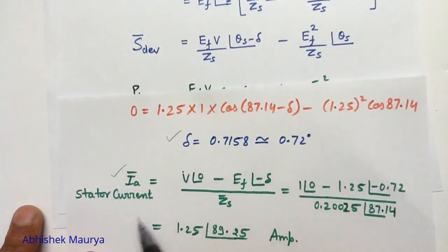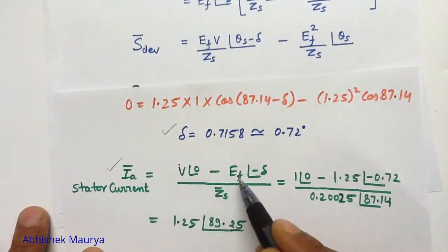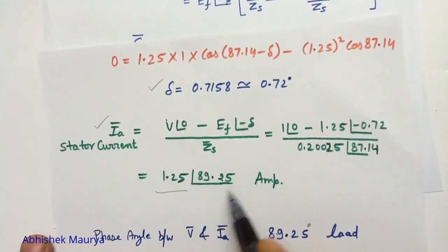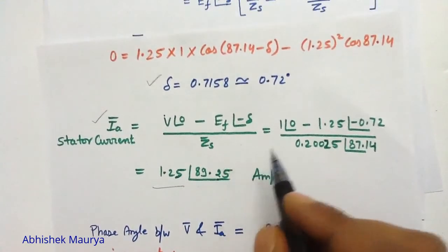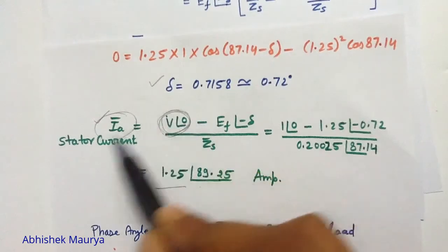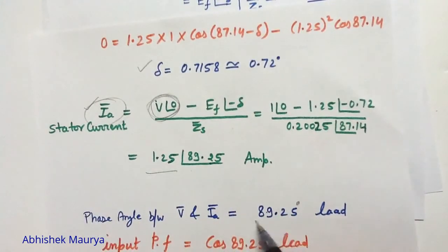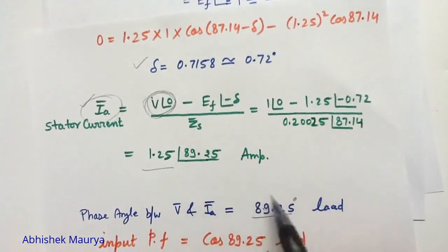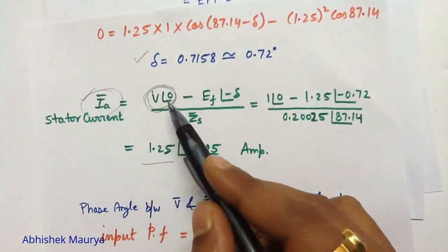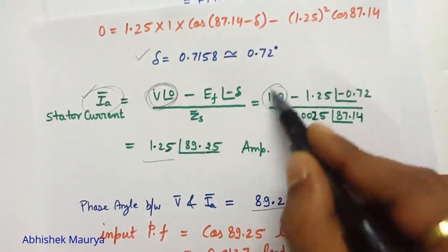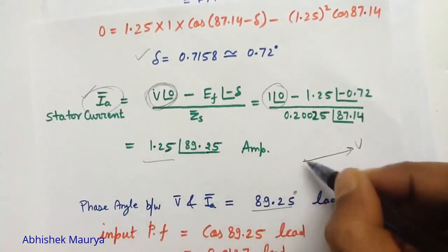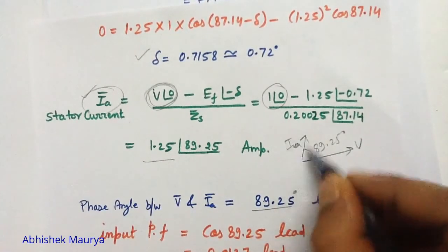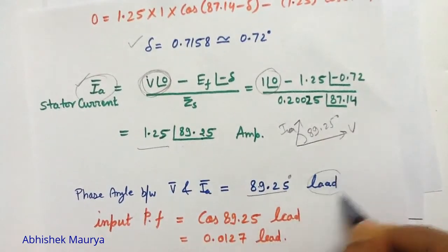In the second step, we calculate the stator current by putting all values of V, EF, delta, and Zs into the equation. We get the stator current equal to 1.25 angle 89.25 per unit. The phase angle between the terminal voltage and the stator current is 89.25 degrees. Drawing the phasor diagram, the terminal voltage is 1 angle 0, and the stator current is leading with respect to the terminal voltage by 89.25 degrees.